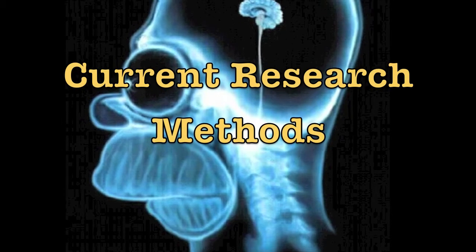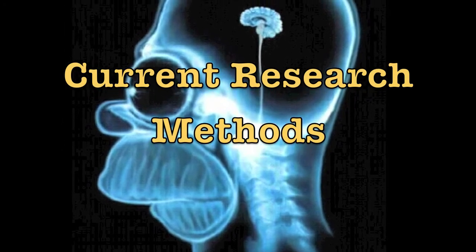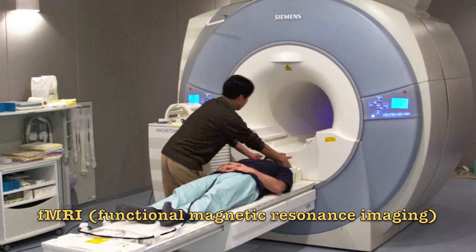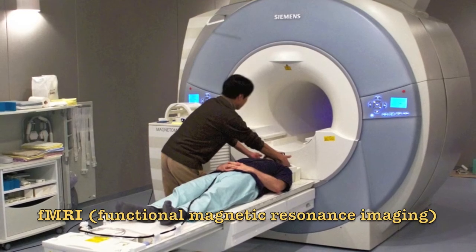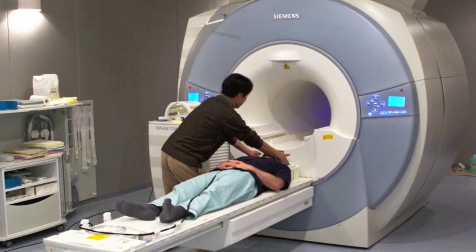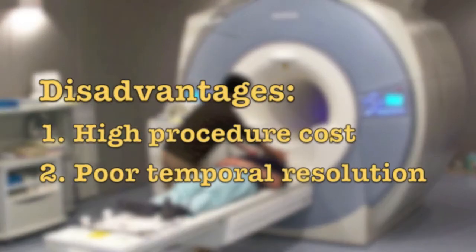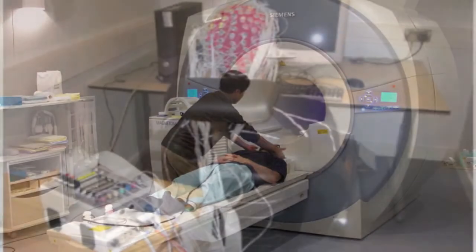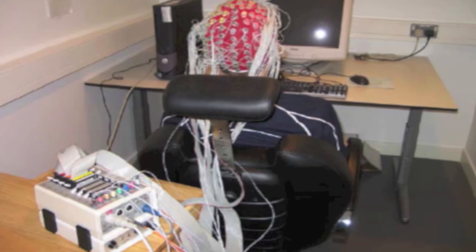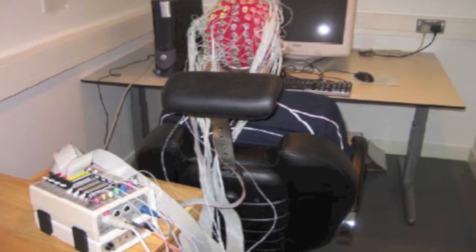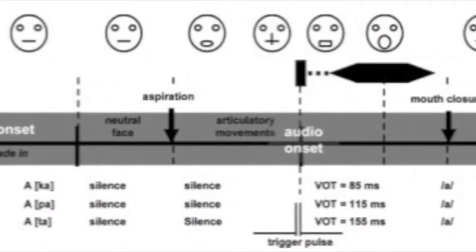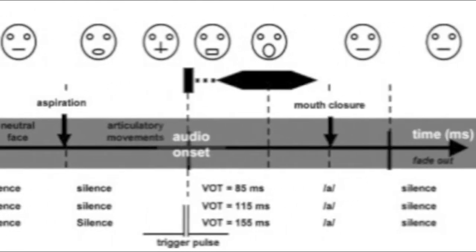Much of the previous research into multisensory integration has relied on the neuroimaging technique of fMRI. While fMRI has revealed interesting insights into the areas of the brain involved in multisensory processing, it is costly and too slow to capture certain events occurring in the brain. Alternative EEG-based methods do not experience these problems. However, most EEG research has been constrained by the need to present synthetic stimuli which do not fully reflect our natural environment.